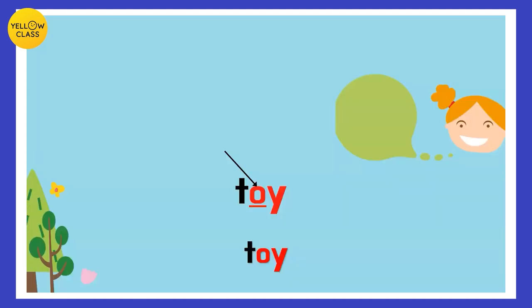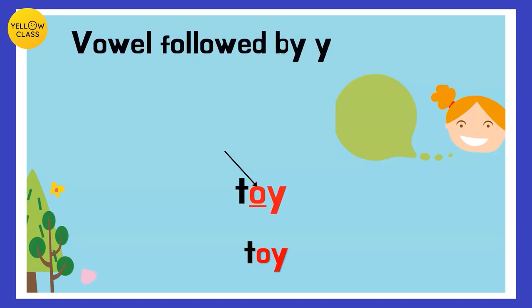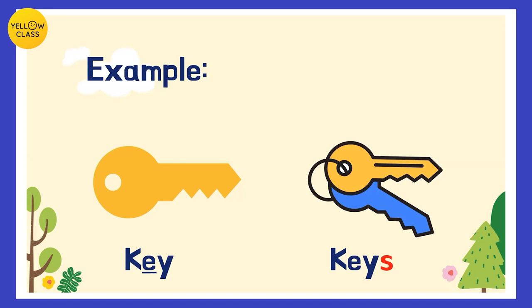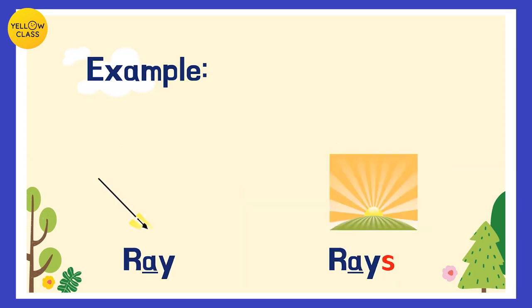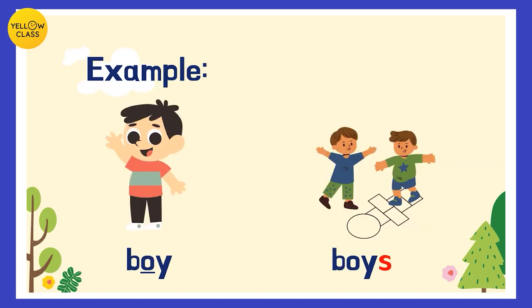Now, what happens when there is a vowel right before the 'y'? The rule says: when there is a vowel followed by 'y', we simply add an 's'. For example, toy — there is a vowel 'o' in front of 'y' — so toy becomes toys. One key, many keys: 'e' is a vowel in front of 'y', so 'y' is not kicked out, it stays, and 's' is added. One boy, many boys: 'o' is a vowel in front of 'y', so 'y' stays and 's' gets added to convert singular to plural.